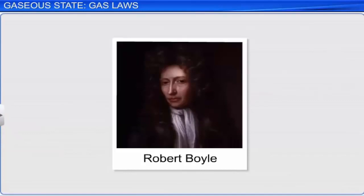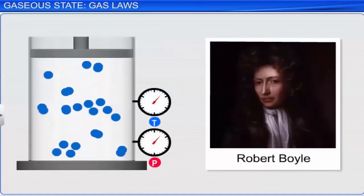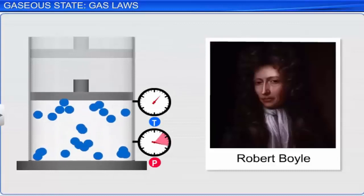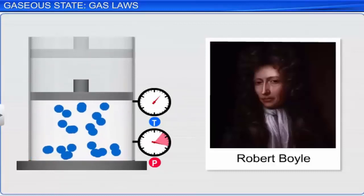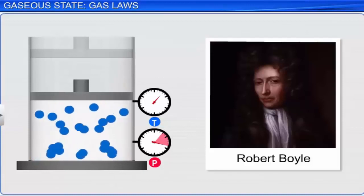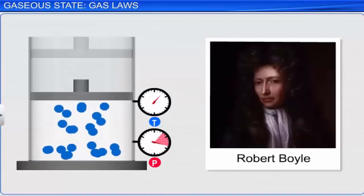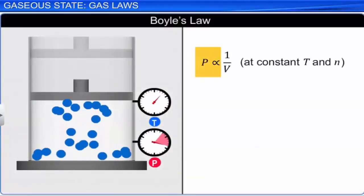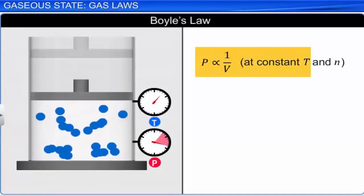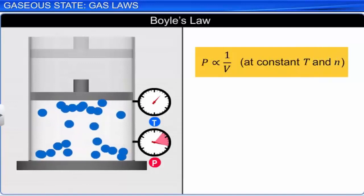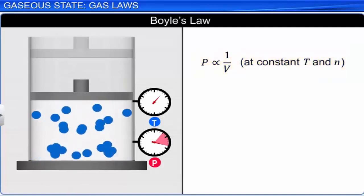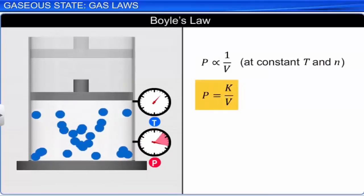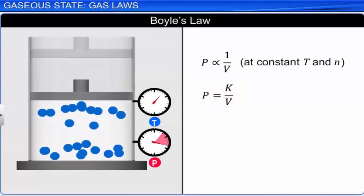In 1662, the pressure of a fixed amount of gas is inversely proportional to its volume. This is known as Boyle's Law. Mathematically, Boyle's Law can be written as P inversely proportional to V at constant temperature T and number of moles of gas N. Or, P is equal to K divided by V, where K is the proportionality constant whose value depends on the temperature and number of moles of the gas.